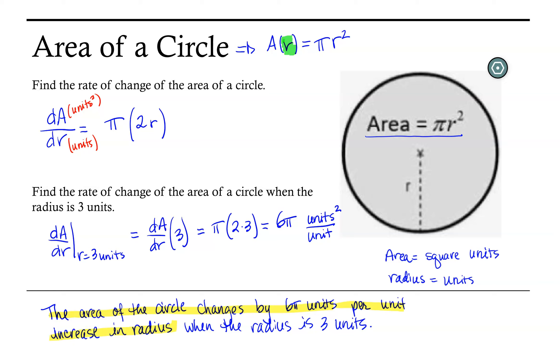So I'm getting 6π units increase in area per unit of radius increase. And that doesn't happen for every radius measure. That only happens when the radius is 3 units.